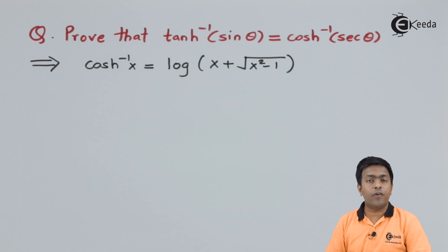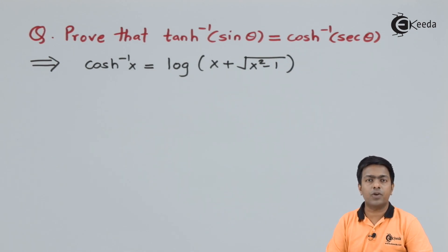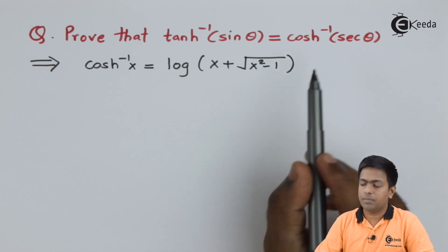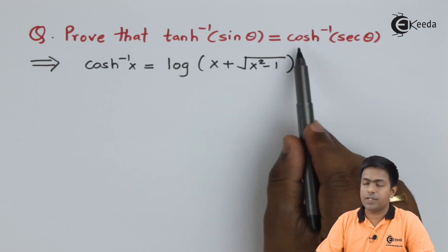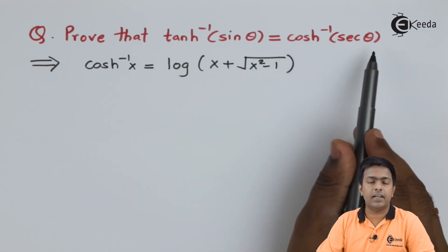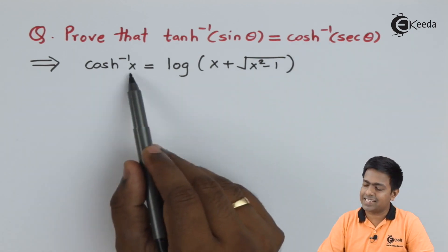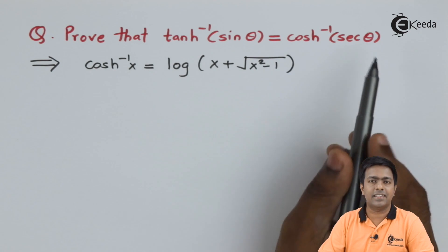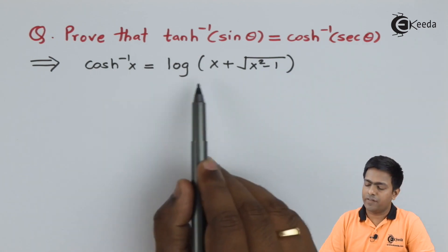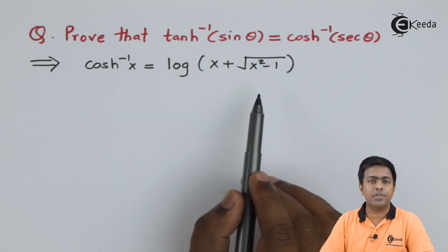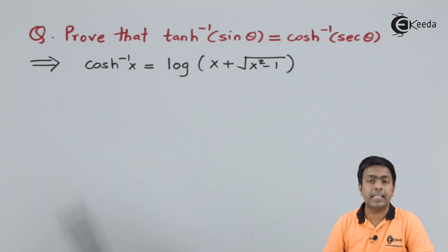This is the formula of cosh⁻¹(x). Since we have cosh⁻¹(sec θ), I'm going to substitute x as sec θ, so everywhere on the right hand side I will substitute x as sec θ.